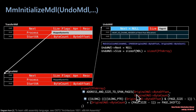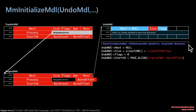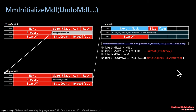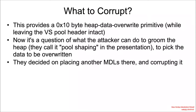The size of the PFN array is attacker-influenced, so the size is attacker-controlled. Flags is hardcoded to zero, so nothing useful for the attacker there. But start VA comes from the page-aligned original MDL byte offset — page alignment just means taking an address and making it aligned to hex 1000 bytes. So start VA is attacker-controlled, byte offset is attacker-controlled from the original MDL byte offset, and byte count is attacker-controlled from the original MDL byte count.